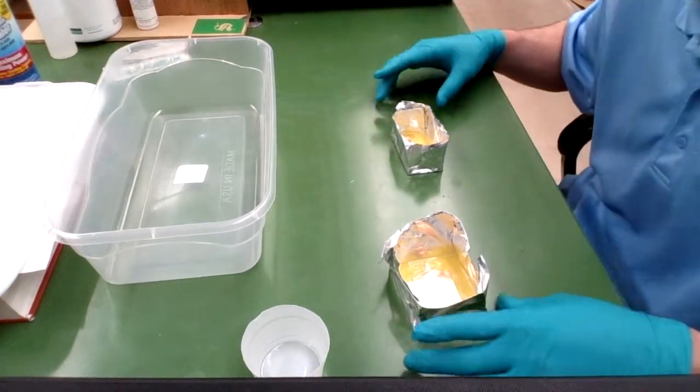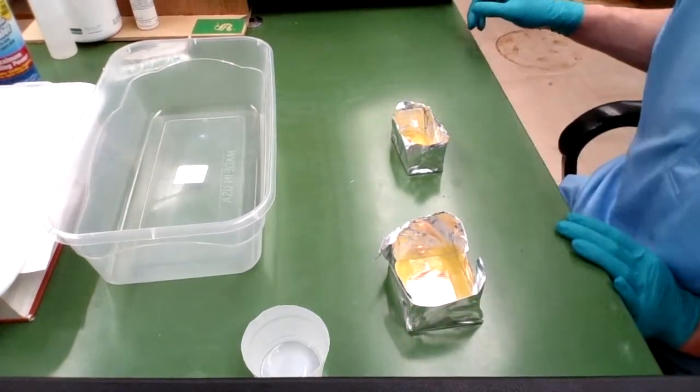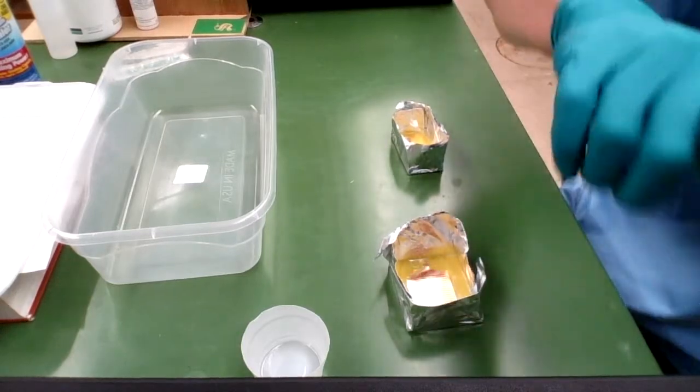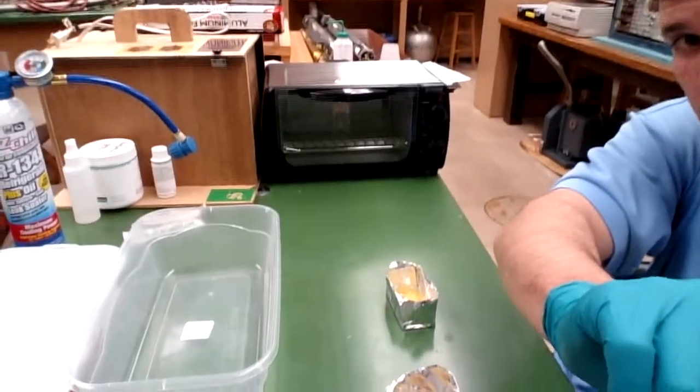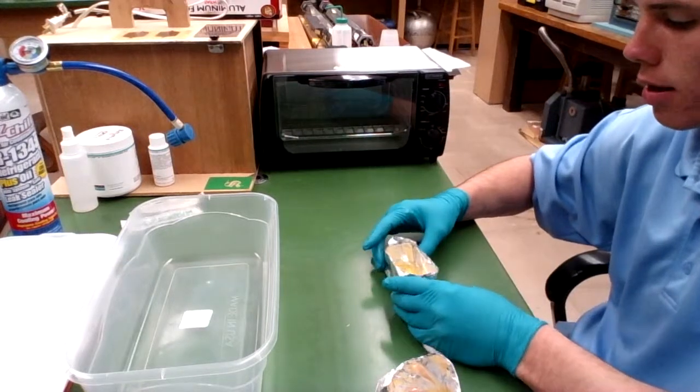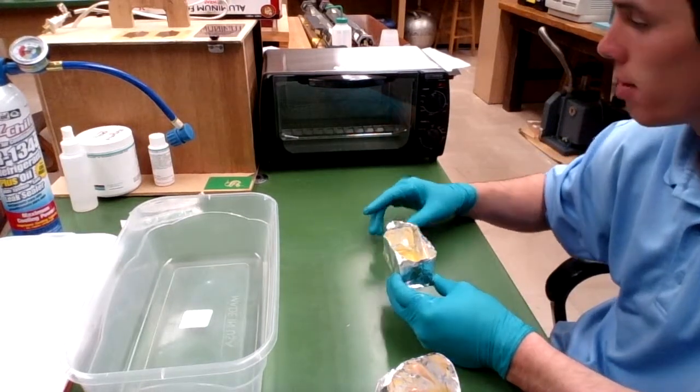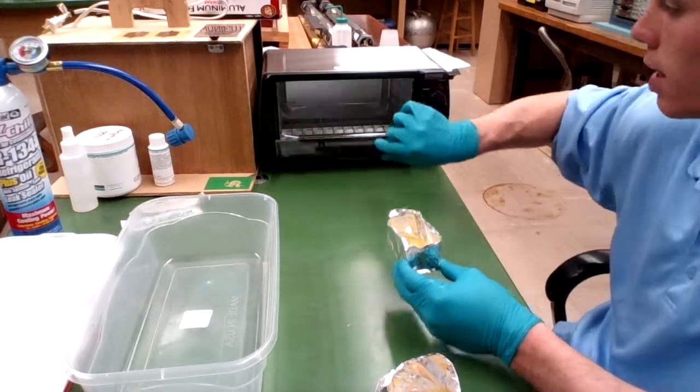So I've poured my PDMS onto my two designs. I have my oven here preheated to 120 degrees Celsius approximately, or 250 degrees Fahrenheit. So I'm going to throw in my PCB for 10 minutes.